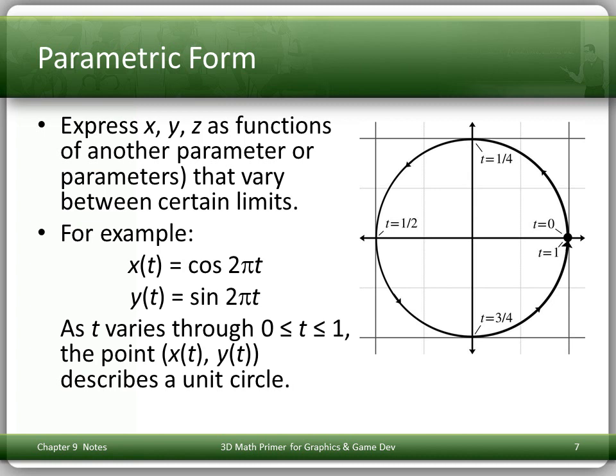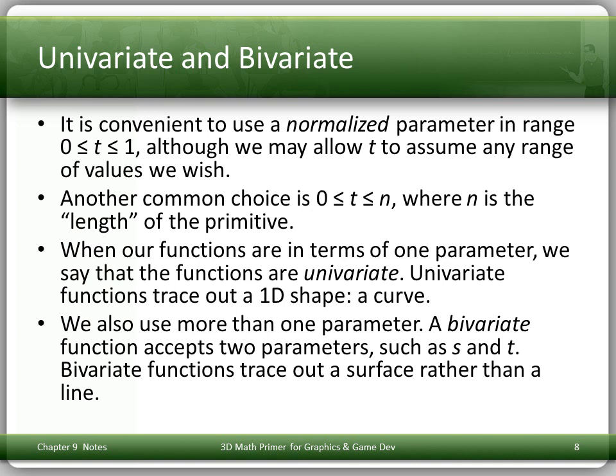It's convenient to use what people often call a normalized parameter in the range 0 through 1, but we could allow t to assume any range of values. Another common choice is between 0 and n, where n is the length of the primitive — some measure that intuitively captures the idea of length. Functions in terms of 1 parameter are called univariate; 2 parameters, bivariate; 3, trivariate, etc. Univariate functions trace out a 1D shape — a curve. With a bivariate function using two parameters s and t, they trace out a surface rather than a line in 3D space.